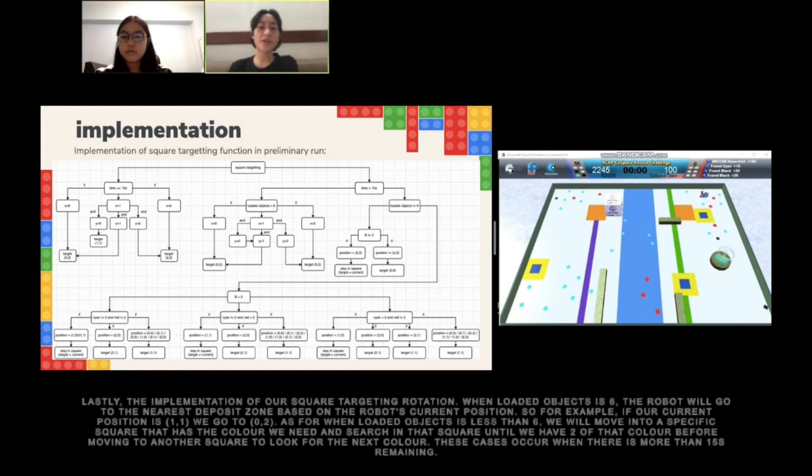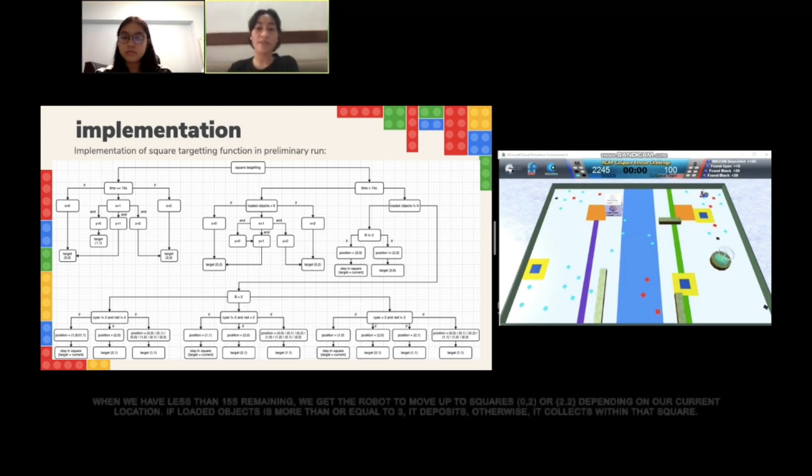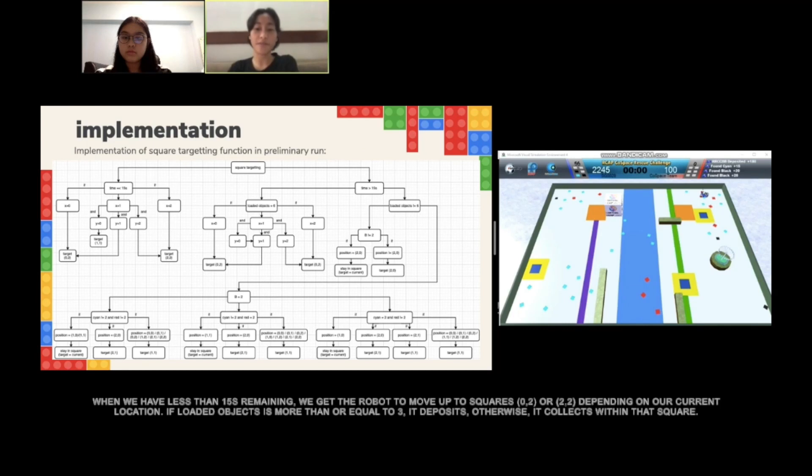Lastly, the implementation of our square targeting rotation. When the loaded object is 6, the robot will go to the nearest deposit zone based on the robot's current position. So for example, if our current position is 1,1, we go to 0,2. As for when loaded object is 1 to 5, we will move into a specific square that has the color that we need and search in that square until we have 2 of that color before moving on to another square to look for the same color. These cases occur when there is more than 15 seconds remaining. When we have less than 16 seconds remaining, we get the robot to move to square 0,2 or 2,2 depending on our current location. If loaded object is more than or equal to 3, we deposit. Otherwise, it stays in that square.